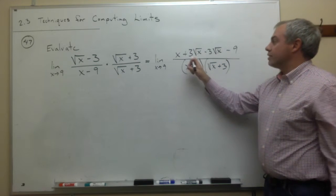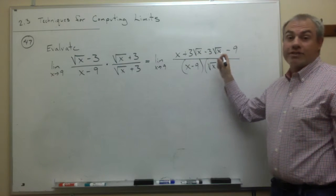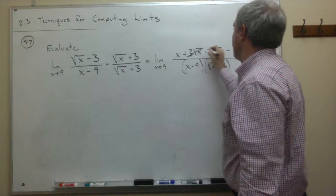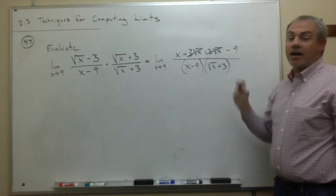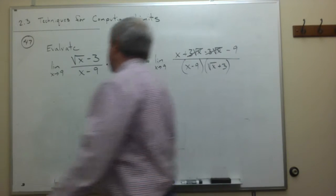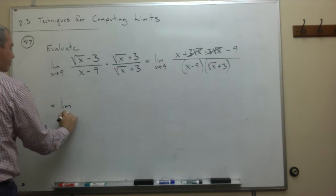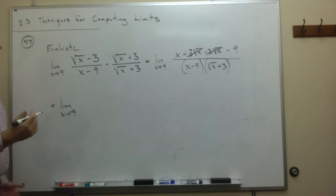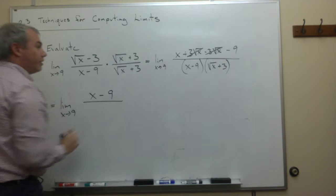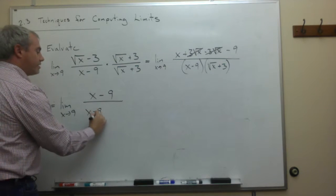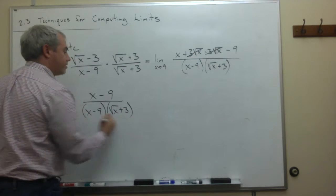We can see that we have a positive 3 square root of x and a negative 3 square root of x, and so those cancel. On top we are just left with x minus 9, which is perfect. So let's rewrite: we get the limit as x goes to 9, with x minus 9 on top, and on the bottom, x minus 9 times the square root of x plus 3. The x minus 9s now cancel.